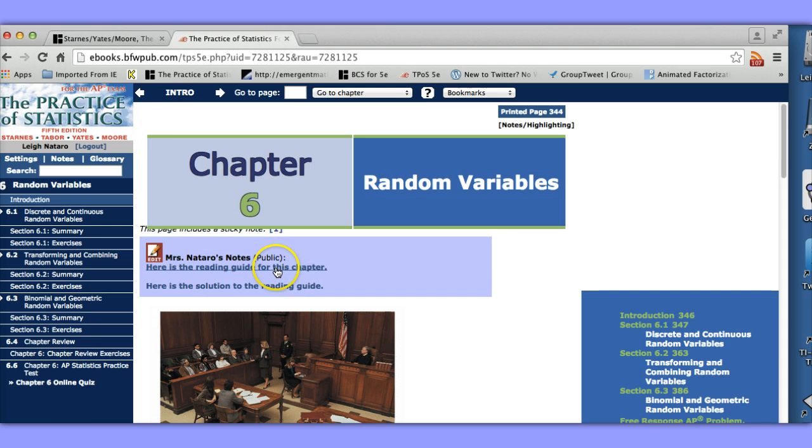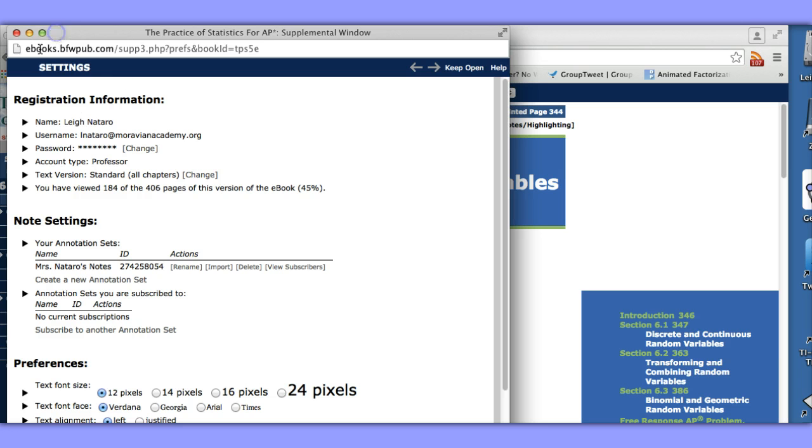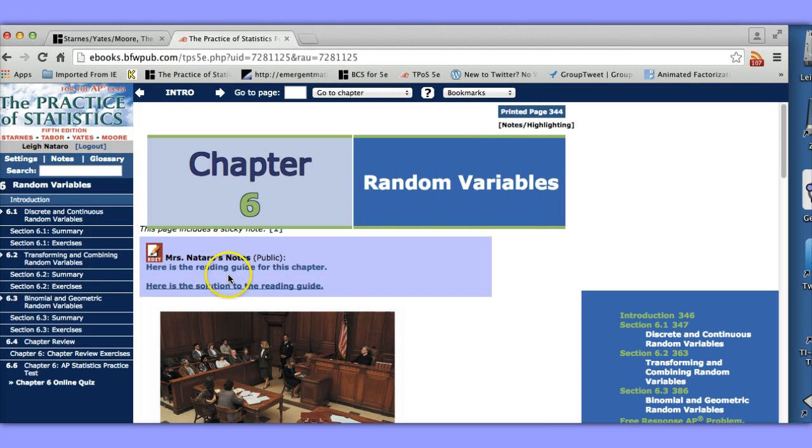Here we can see that the students would have this note that they could access. It's a public note and I created the note. As long as the student subscribes to my annotation set they will get that note. So in settings here, notice there's an annotation ID number. The student types that in within their book in the same area to subscribe to the annotation set. They would just subscribe to an annotation set, type in this ID number and voila, this would appear within their book.